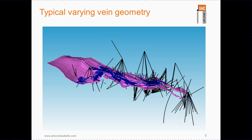This slide shows an example of a vein that has been modelled using a combination of both drill data and mining information. You can see that there is a large variation in the strike, dip and width of this vein and that there is at least one splay and apparent faulting.